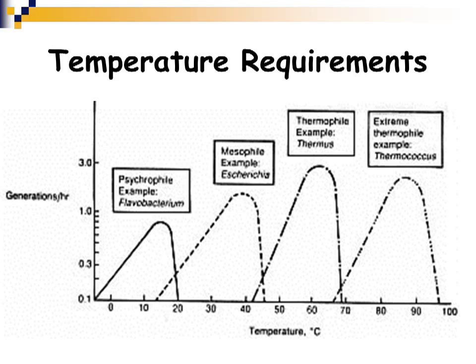We then have the extreme thermophiles that like very high temperatures — organisms that grow at around 68 degrees up to almost 100 degrees Celsius. These thermophiles and extreme thermophiles are found in hot springs, water heaters, and similar high-temperature environments.